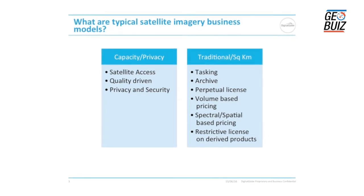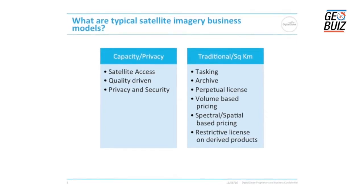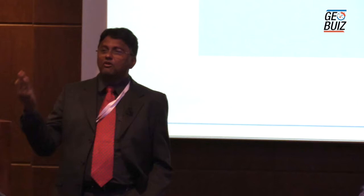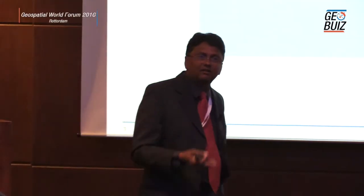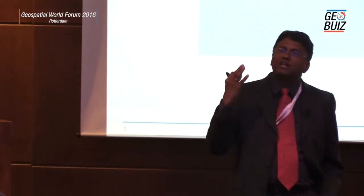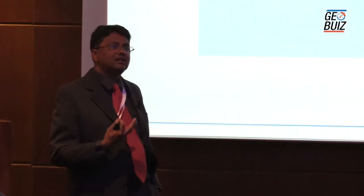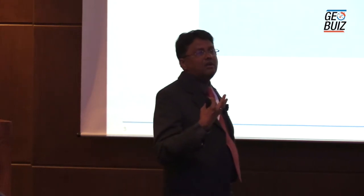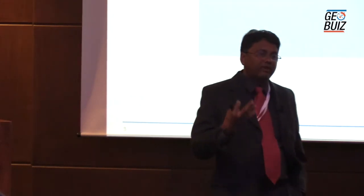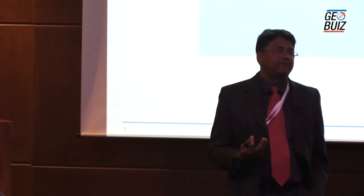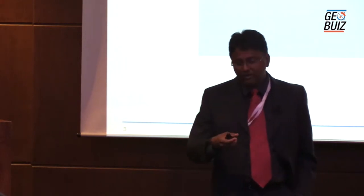Finally, there's the topic of data derived from imagery — it's a fuzzy licensing area. When we give you imagery and you derive road data, land use, land cover, or bathymetry — what is the licensing on those derived products? It's very fuzzy, because we were a niche industry in the early 2000s. Now it has proliferated, and we've evolved over the last 10 to 15 years, so we are evolving our business models along with that.